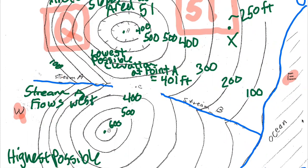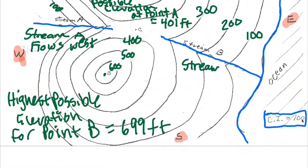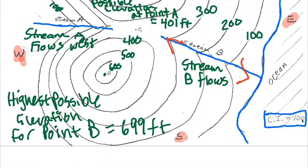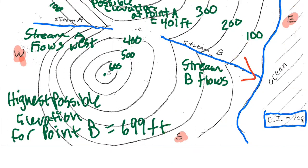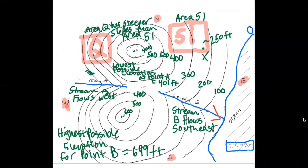Stream B either flows one way or the other. Look at the elevations above it: 300, 200, 100 — heading toward the ocean. So the stream flows toward the ocean. The contour lines point the other way, and stream flow is the opposite. Looking at the compass, it's splitting south and east right down the middle, so stream B flows southeast.